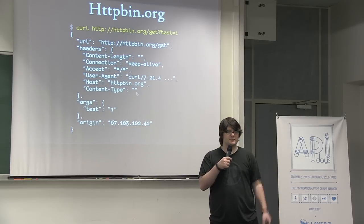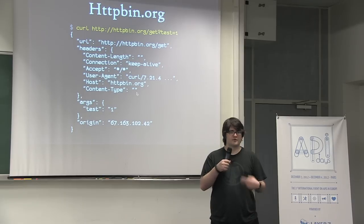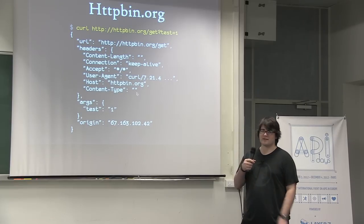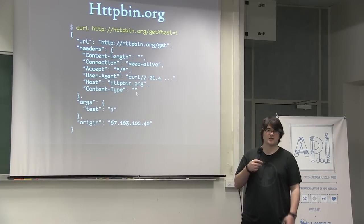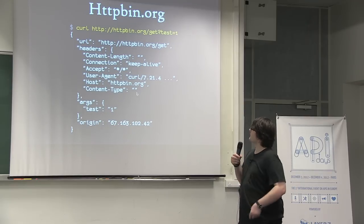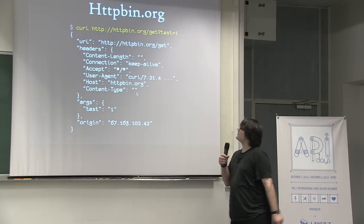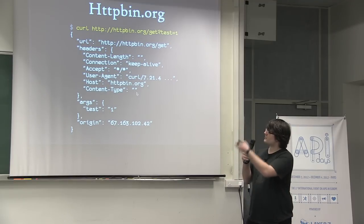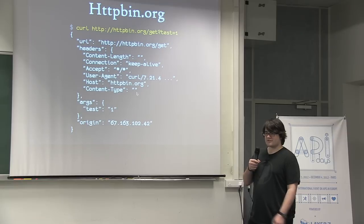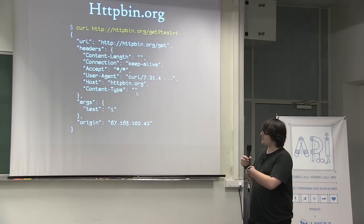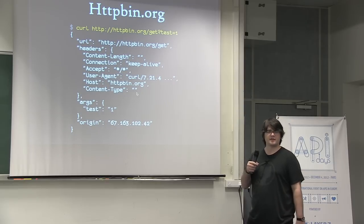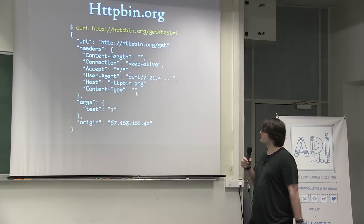There is HTTPbin, which is a service that I developed for Requests. When I was developing it, I needed to write unit tests, and it was frustrating to find out what a client was sending. So if you're trying to debug anything in an API or a client, you can send it requests. We're just sending a simple GET request to the get endpoint on HTTPbin, and it gives you a simple JSON response showing exactly what the client sent. You can debug all the headers, ask it to give you basic authentication challenges, redirects, and all kinds of cool stuff for debugging.